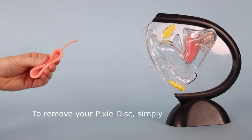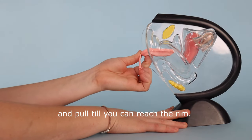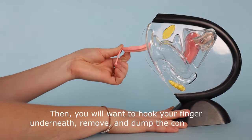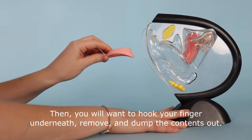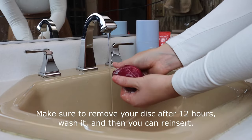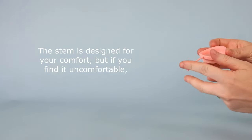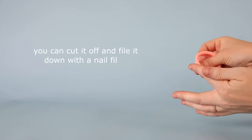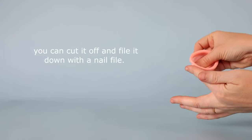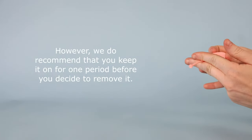To remove your Pixie disc simply grab the stem and pull until you can reach the rim. Then you'll want to hook your finger underneath and then remove and dump the contents out. Make sure to remove your disc after 12 hours, wash it, and then you can reinsert. The stem is designed for your comfort but if you find it uncomfortable you can cut it off and then file it down with a nail file. However, we do recommend that you keep it on for at least one period before you decide to remove it.